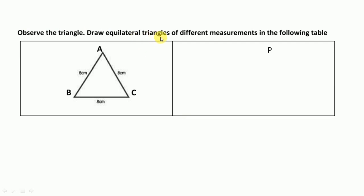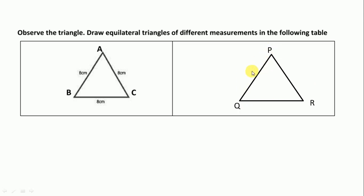Draw equilateral triangles of different measurements in the following table. You just draw a triangle like this with pencil and scale. Here we have to show three sides are equal, so we write 5 cm on each side and label it as PQR. Equilateral triangle means all sides are equal, so we write 5 cm, 5 cm, and 5 cm.